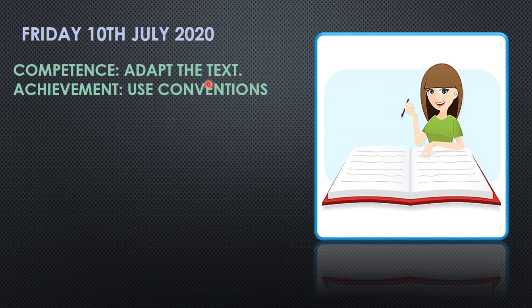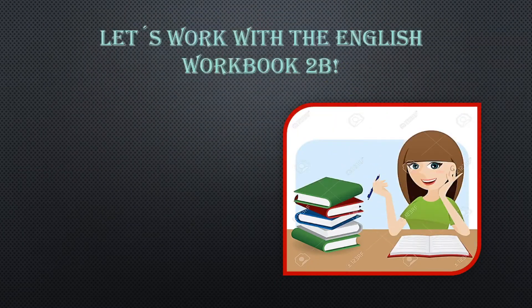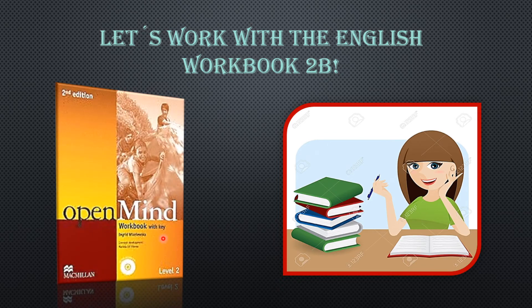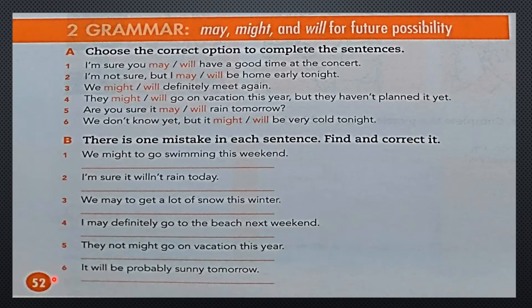And the competency and achievement here we have: adapt the text and use conventions. And the topic is the review: may, might, and will for future possibility. It's the topic that we have done.